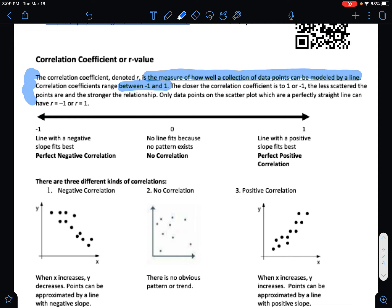Notice that the correlation is between negative 1 and 1. The closer the correlation coefficient is to 1 or negative 1, the less scattered the points are and the stronger the relationship. Only data points on the scatter plot which are on a perfectly straight line can have R equal to negative 1 or 1.